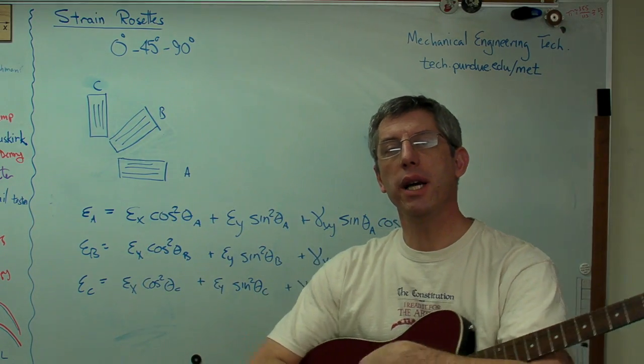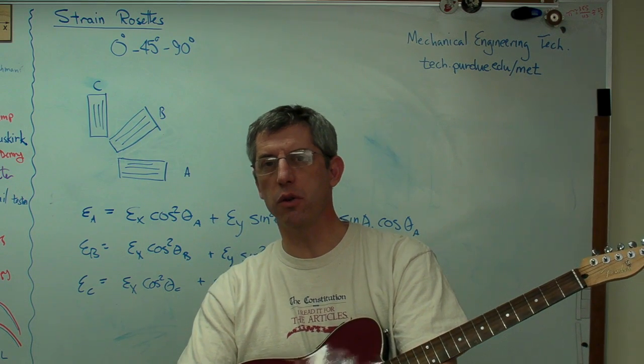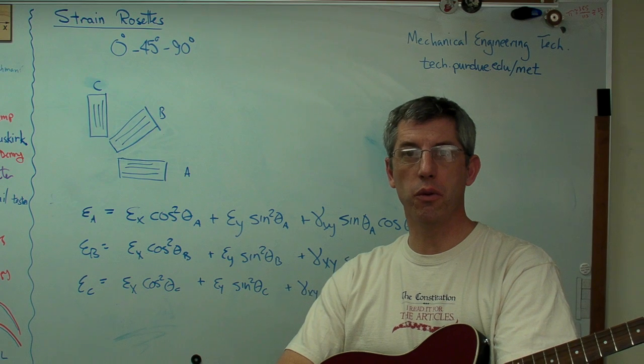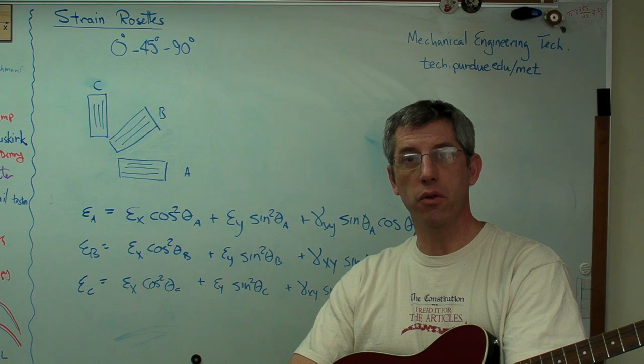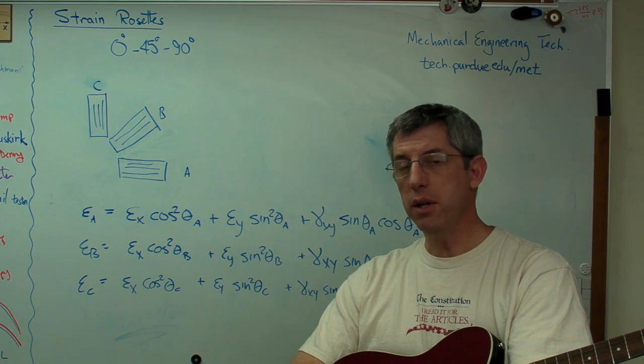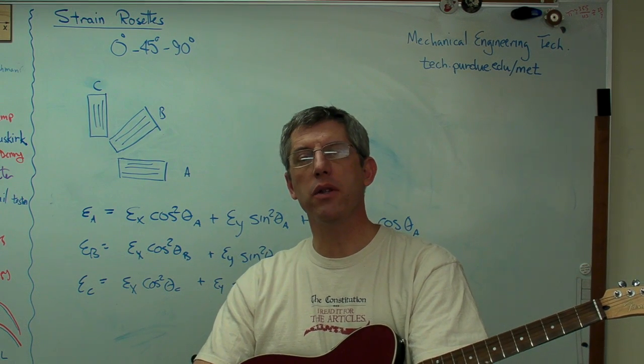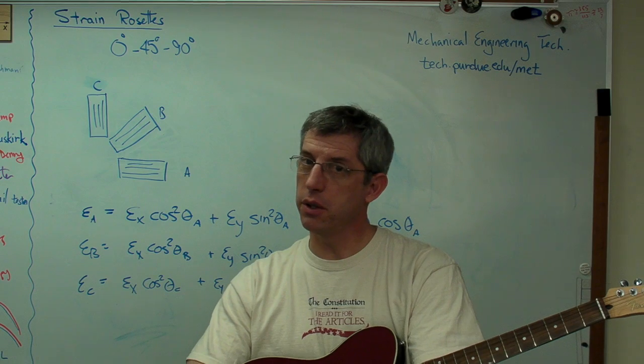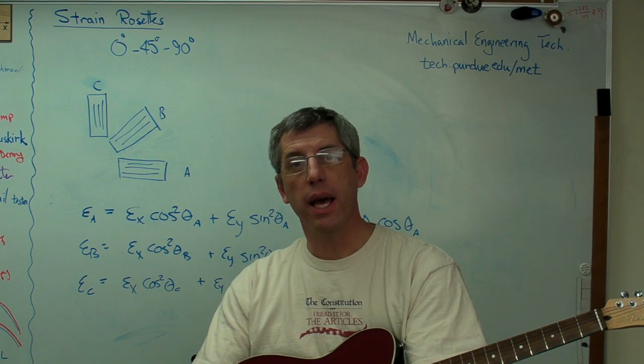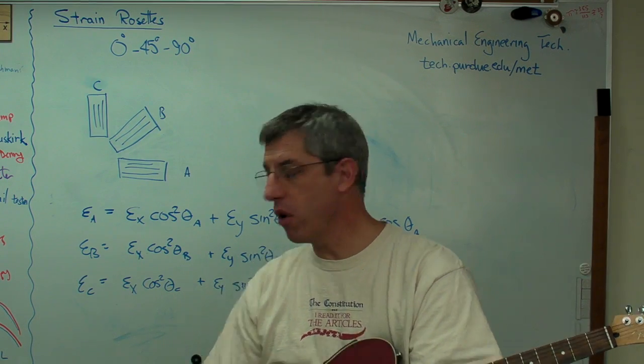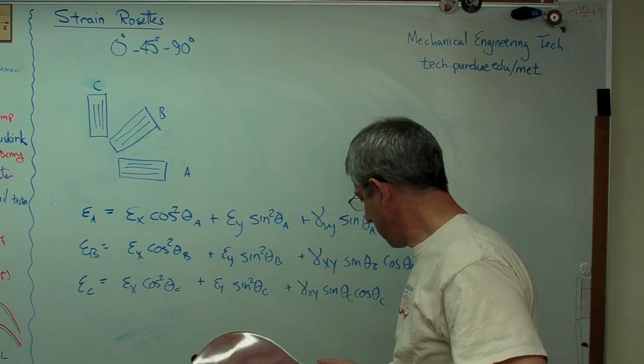Well, here's the problem. Strain gauges mostly only measure normal strain. There is such a thing as a shear gauge, but they're fairly unusual. Typically what you'll see is you'll get a group of three conventional gauges that measure normal strain only. And they'll measure normal strain in whatever direction you happen to stick them on. It turns out there's an easy way to start with three normal strain measurements, as long as they're in three different directions, and calculate epsilon x, epsilon y, and gamma xy. And I'm going to go over that here, you can see it on the board behind me. But let me show you how this is going to work.